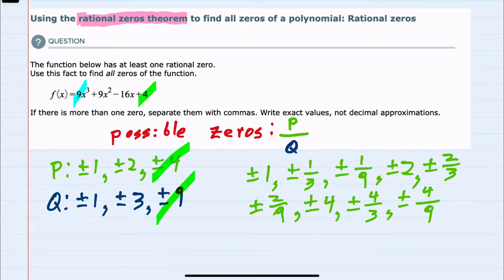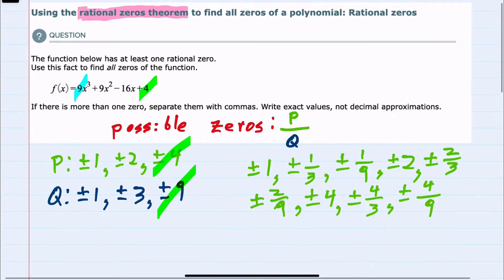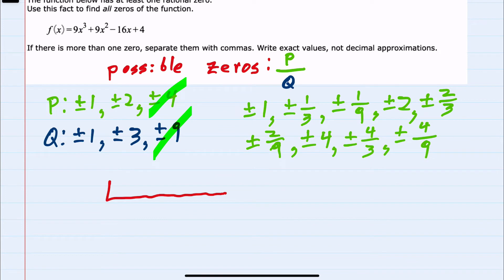To test each one of these and determine if it is actually a zero, we can use synthetic division, where our coefficients are inside, and then we test each of these solutions. I'll start by testing positive 1. For synthetic division, I'll bring down the first term, multiply: 1 times 9 is 9.